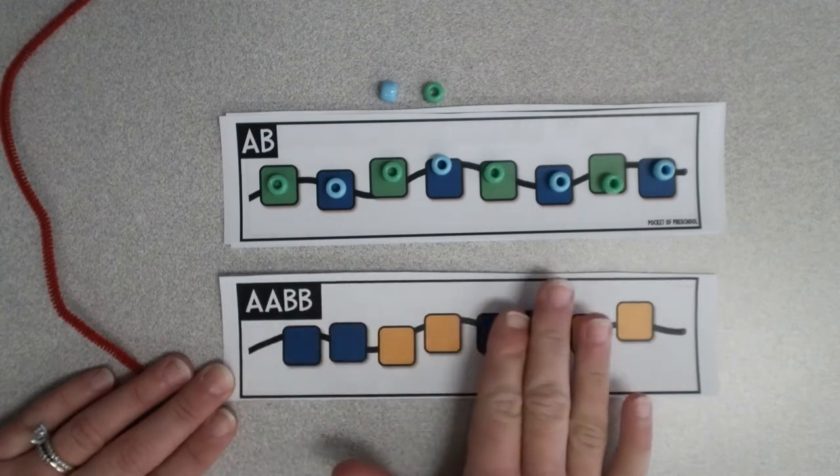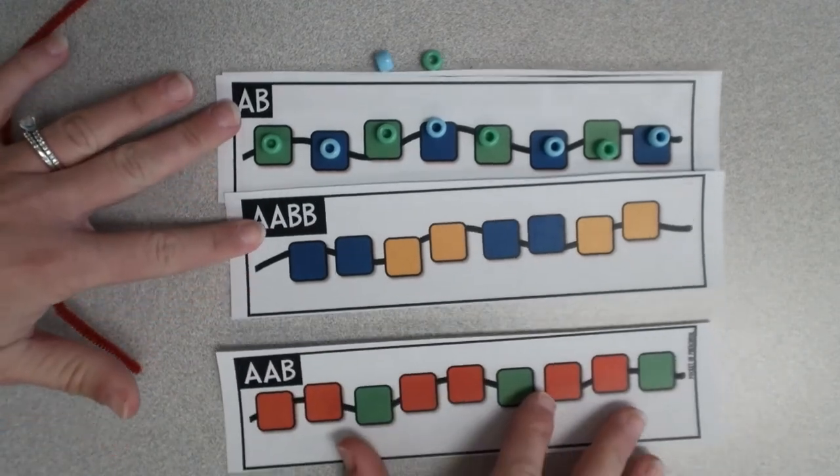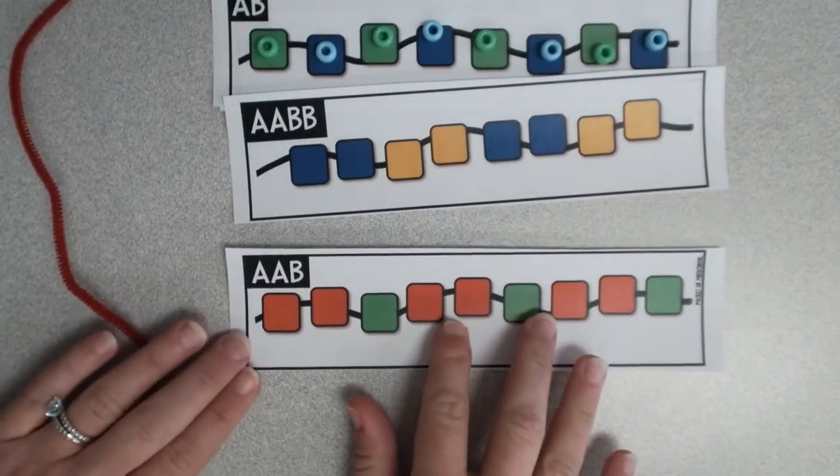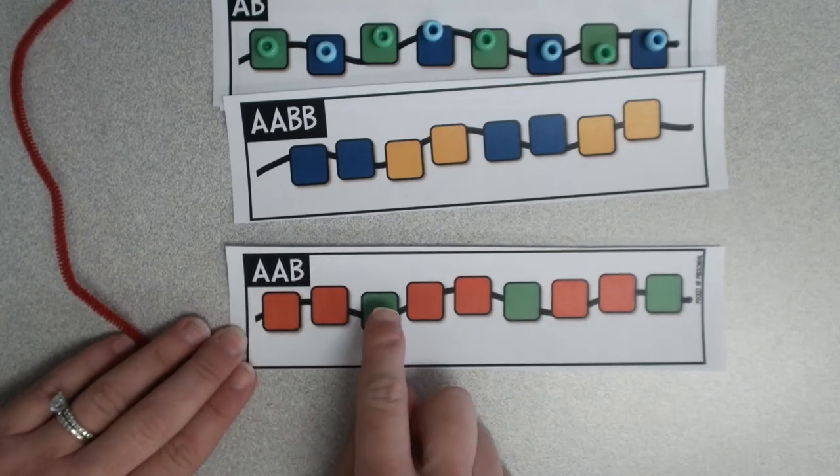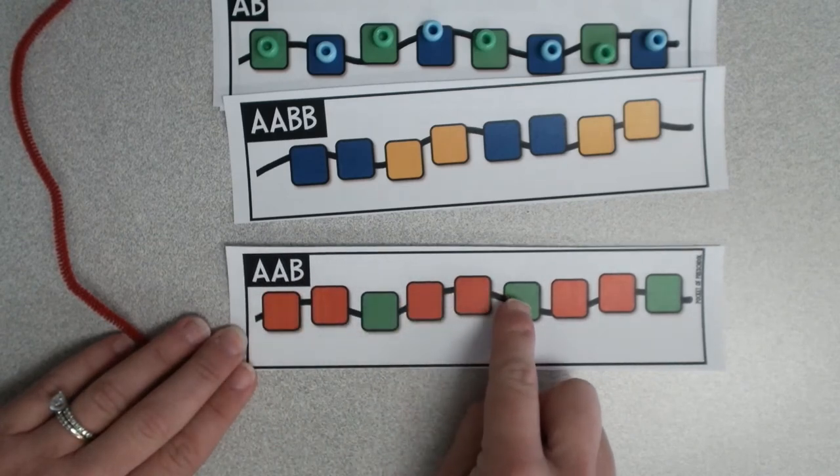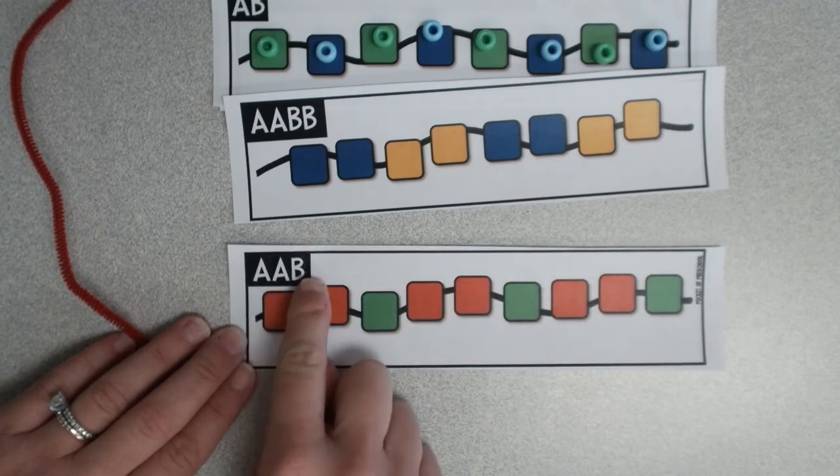If they've mastered this pattern, you can make it even a little bit more difficult and try something like this. A-A-B. So orange, orange, green, orange, orange, green, orange, orange, green. It's an A-A-B pattern.